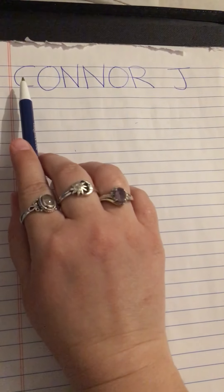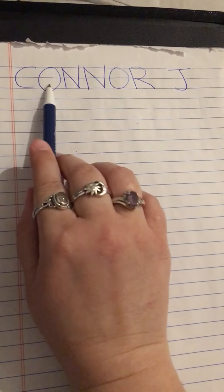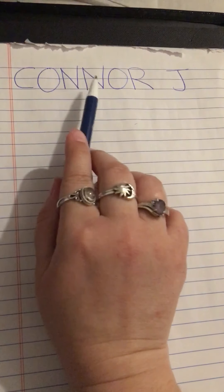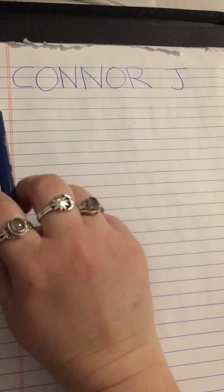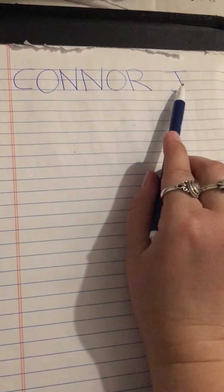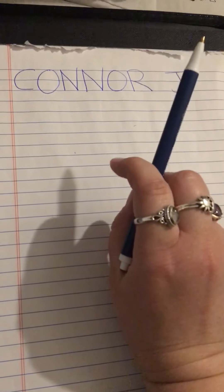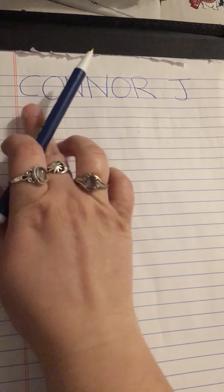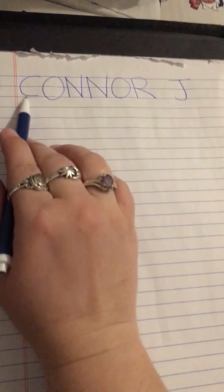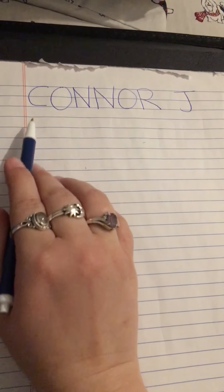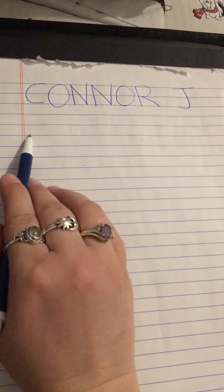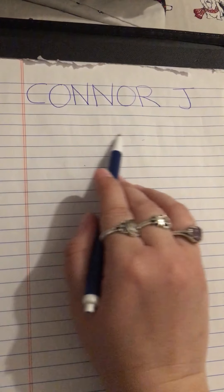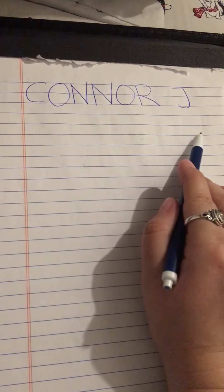For Connor we have C-O-N-N-O-R and then J for his last name. When we start writing Connor's name we want to start over here to the left, and when we write our letters we move from the left and go towards the right.